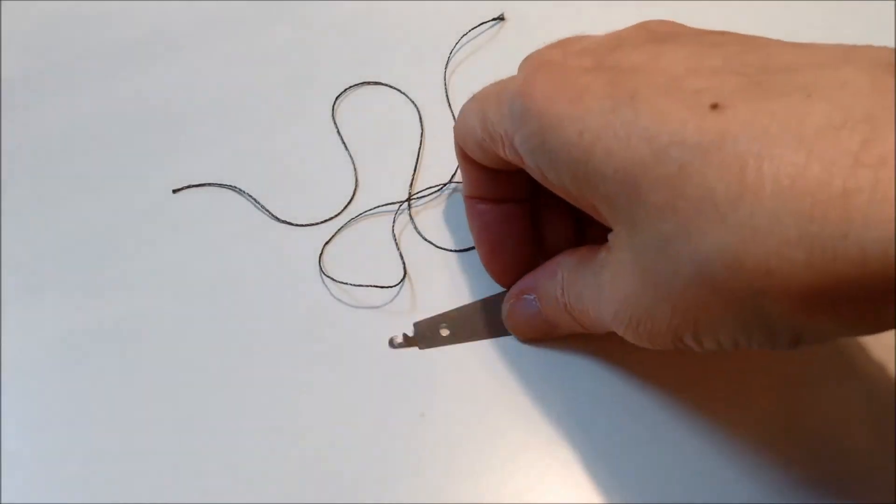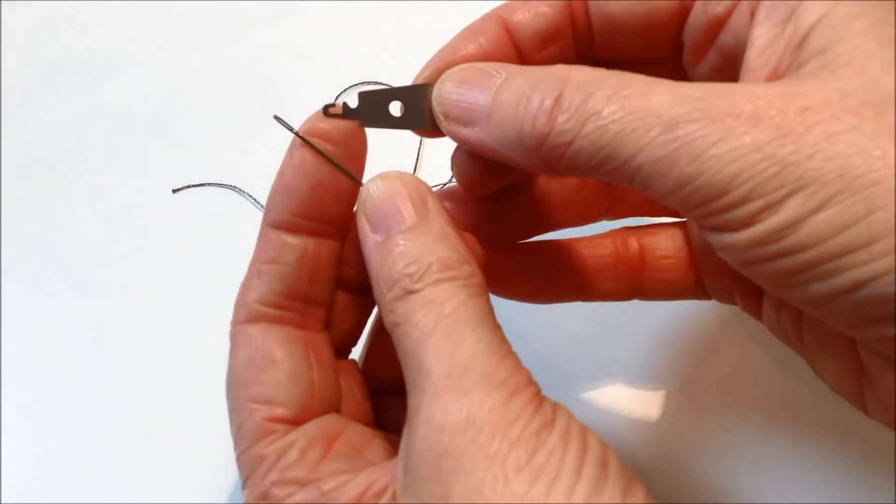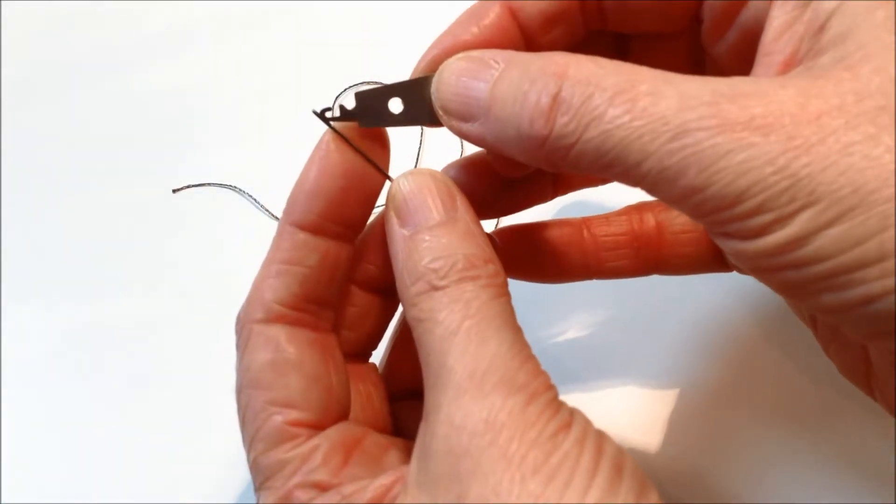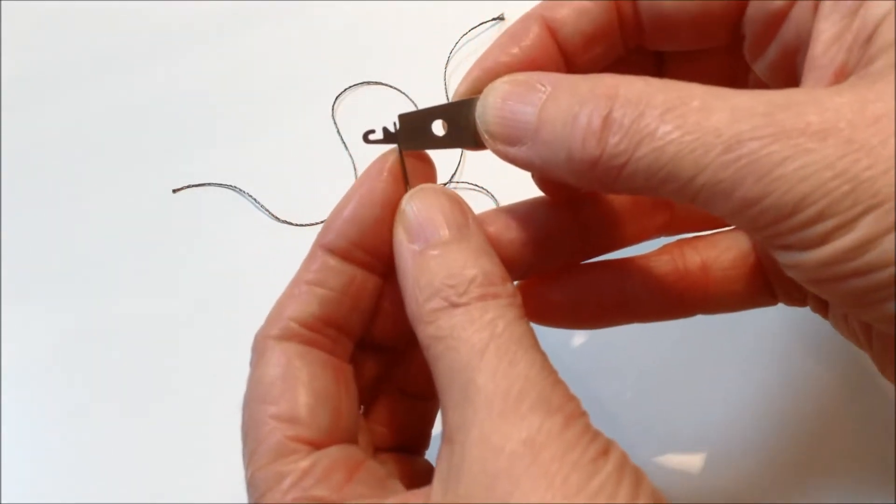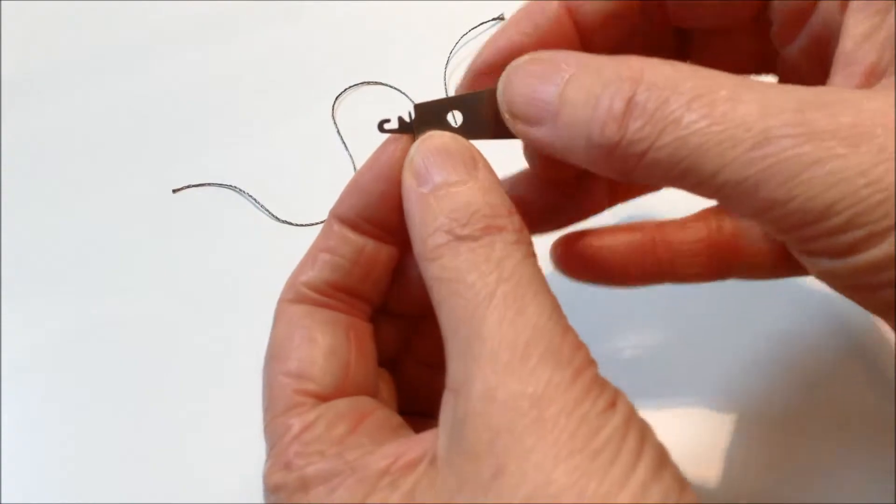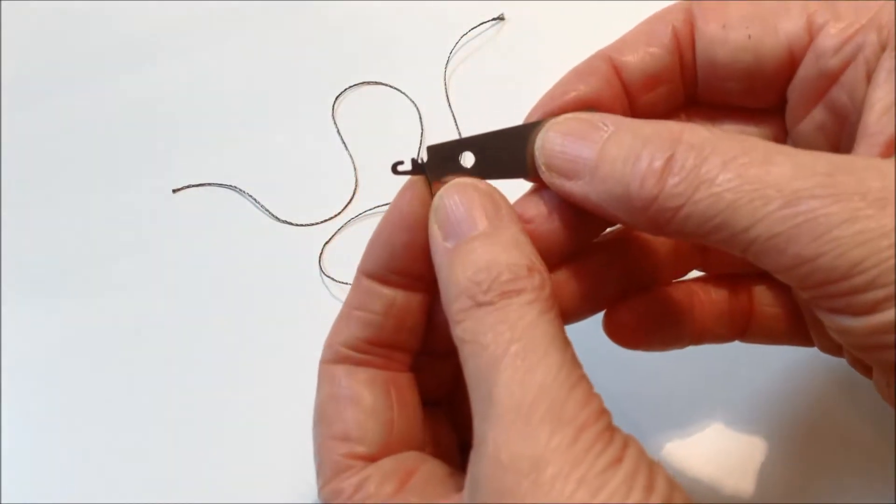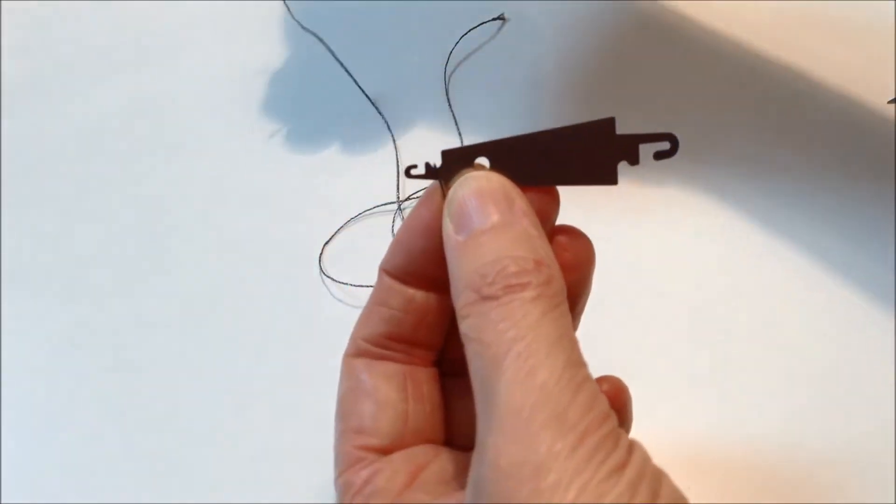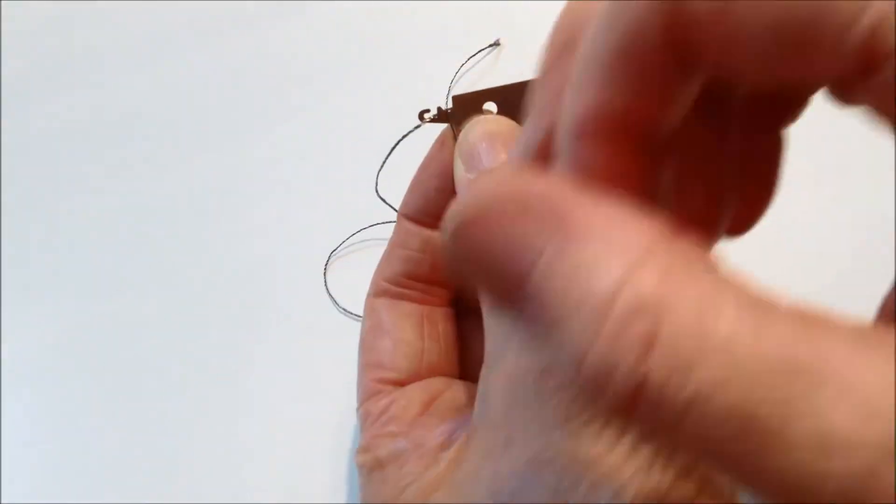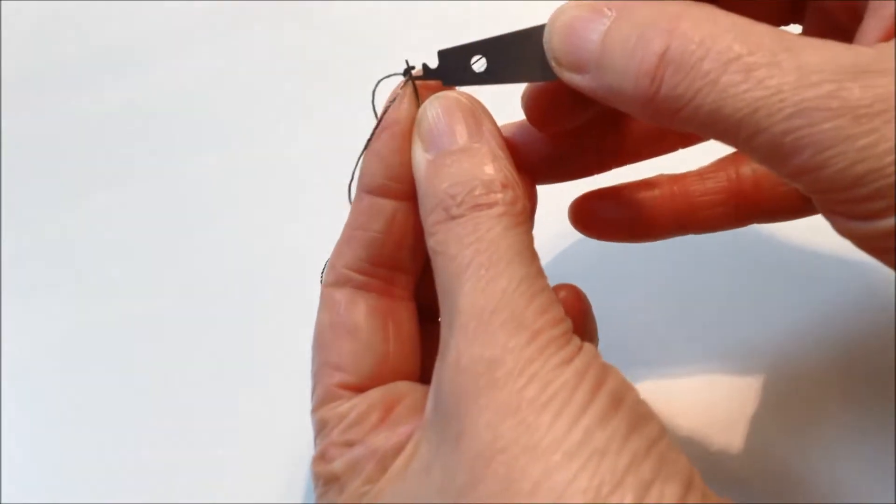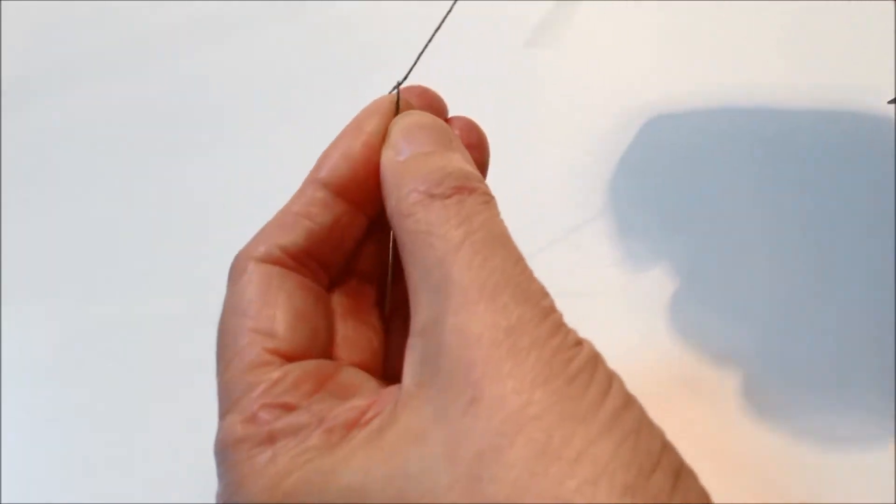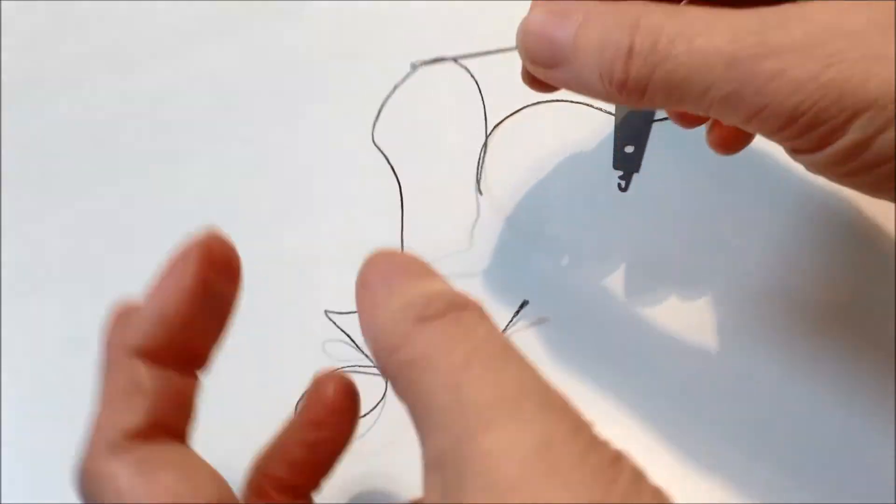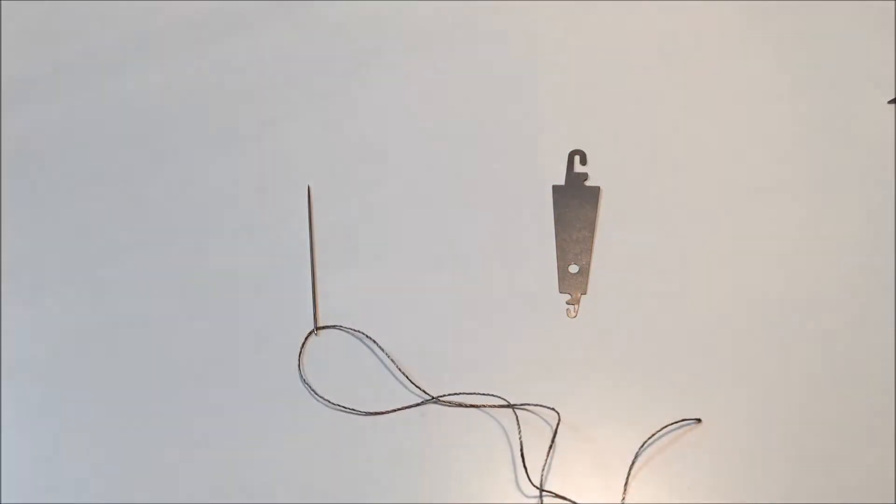To use this particular needle threader, you thread the little hook into the eye of the needle, so you will need to make sure that the eye of the needle is big enough to allow this little hook to go inside. You lay your thread just over the little hook just there and then pull it through. And then just pull the end of thread through and there you have your needle threaded.